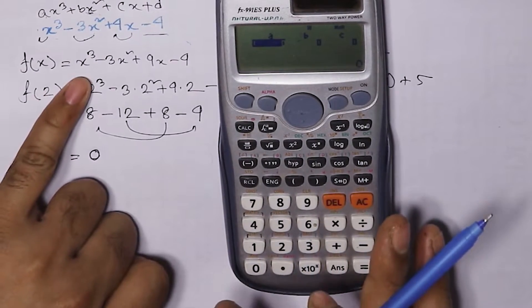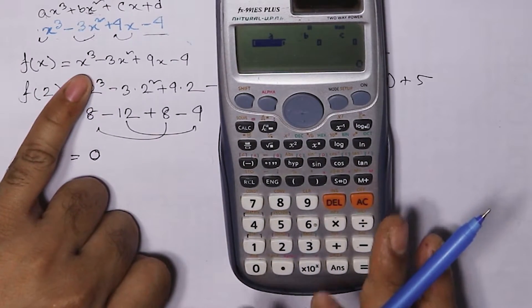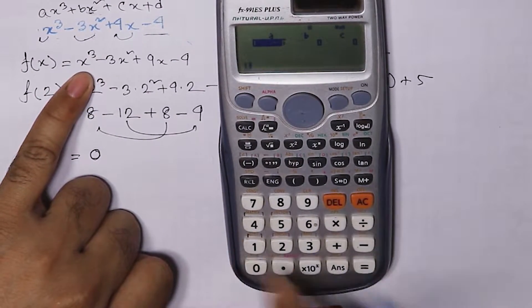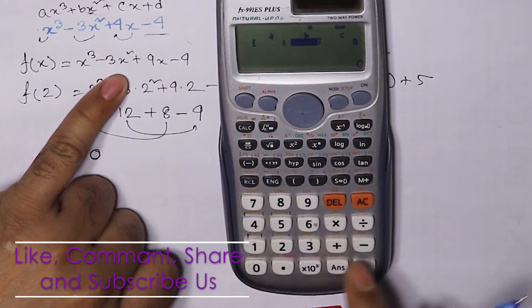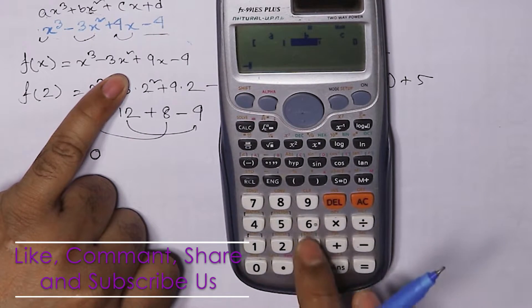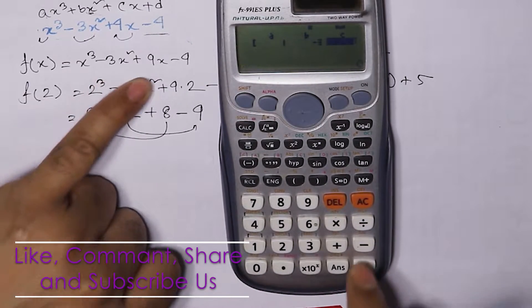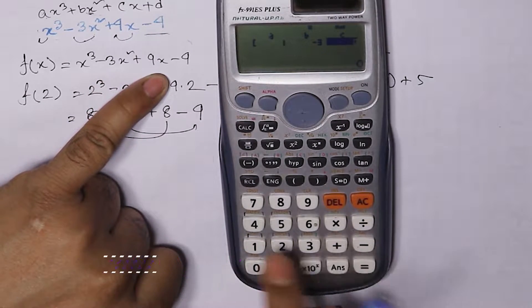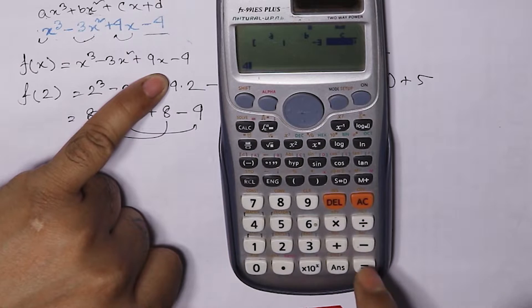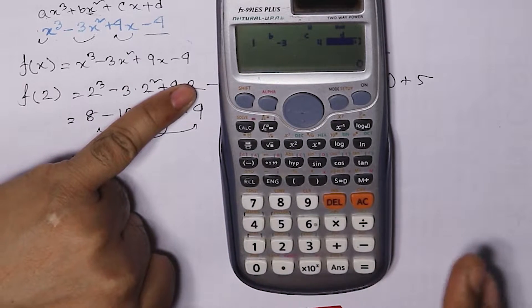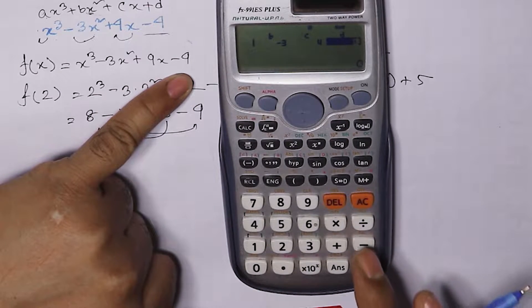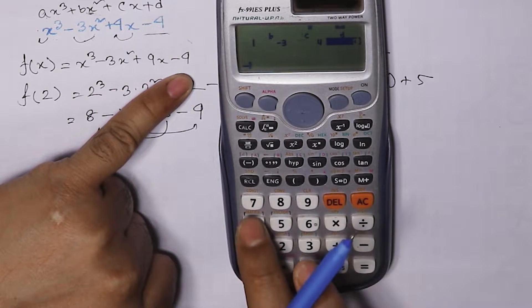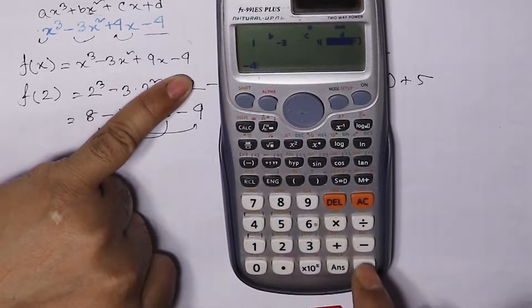We can find the x cubed is equal to 1, x squared is minus 3, then minus 3 is equal. x squared is 4, then 4 is equal. Then d equals d is minus 4. If we find equal, then we can find the same value.